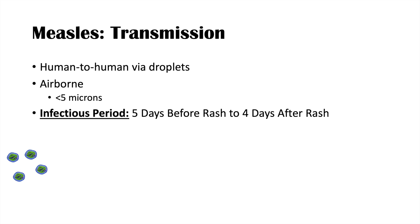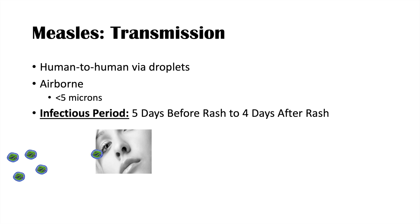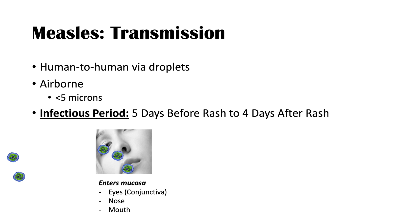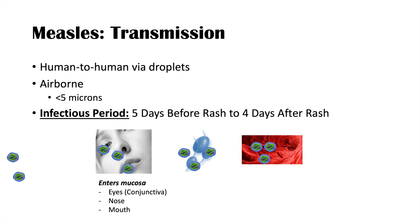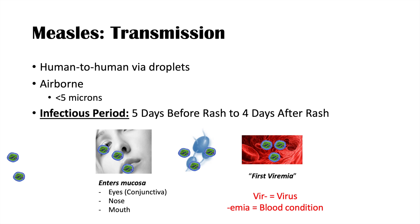If there are measles viruses in the air — airborne or in droplets — an individual can come into contact with them, and the virus can enter via mucous membranes, particularly in the face: the eyes, the conjunctiva of the eyes, the nose, and the mouth. The virus then multiplies and enters into regional lymph nodes where it multiplies even more, and then enters into the bloodstream — this is what we call the first viremia, meaning virus in the blood.